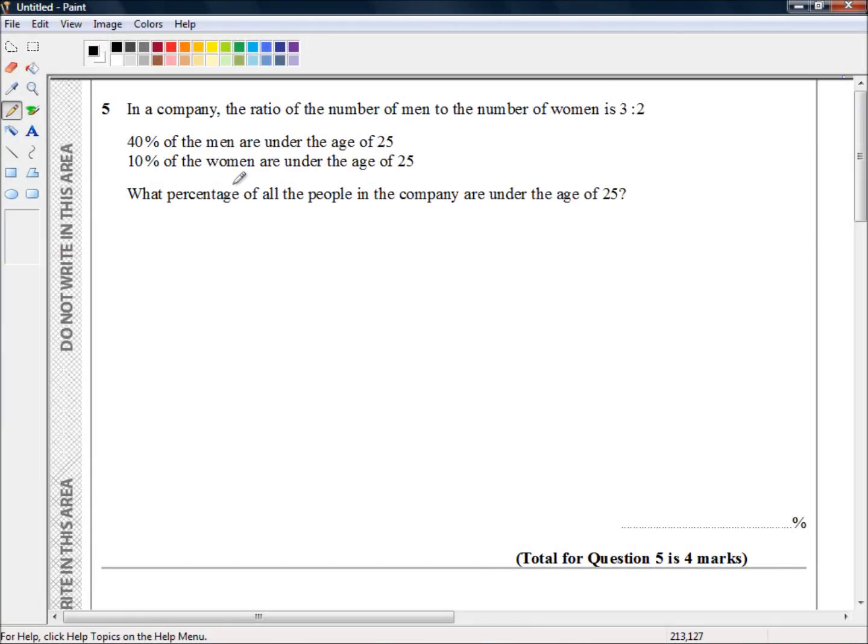Hello and welcome to the Edexcel New Style GCSEs, grades 9 through to 1. This is paper 1MA1-1H, the first paper in the higher tier. It's a non-calculator paper and we're picking up at question 5. In a company, the ratio of men to women is 3 to 2. 40% of the men are under the age of 25, and 10% of the women are under the age of 25. What percentage of all the people in the company are under the age of 25?